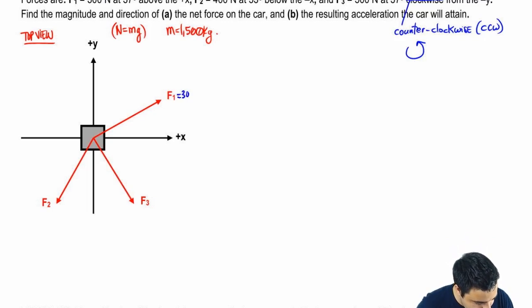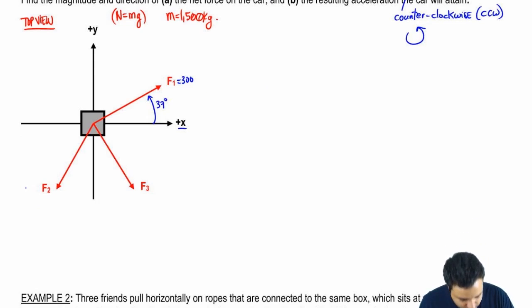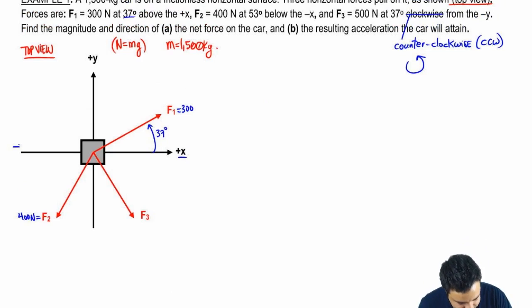So f1 is 300, 37 above the positive x. Positive x is here, 37 above looks like this. So I'm going to put a 37 over here, try to make this as small as possible so we can fit all the arrows. There's going to be a bunch of them. F2 is 400 newtons, and it is at 53 below the negative x. So negative x is over here, so it's 53 below that, so it looks like this. And f3 is 500, counterclockwise, 37 counterclockwise from the negative y. Negative y is over here. And counterclockwise, clockwise would be this way, counterclockwise is that way. So counterclockwise would look like this. So this is our 37 right here. So these are magnitudes and directions for all of these vectors.